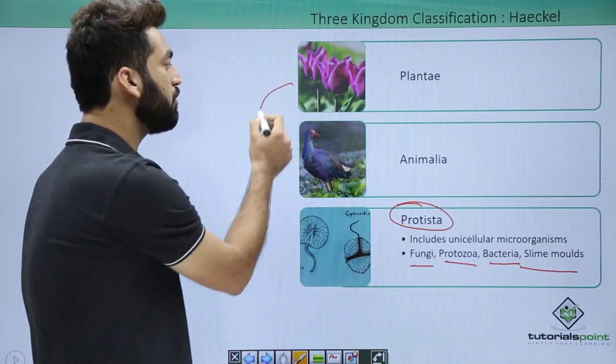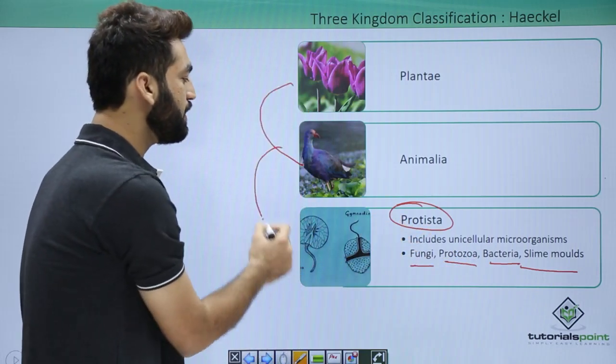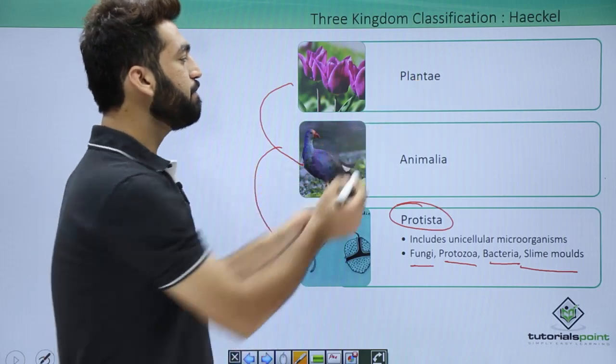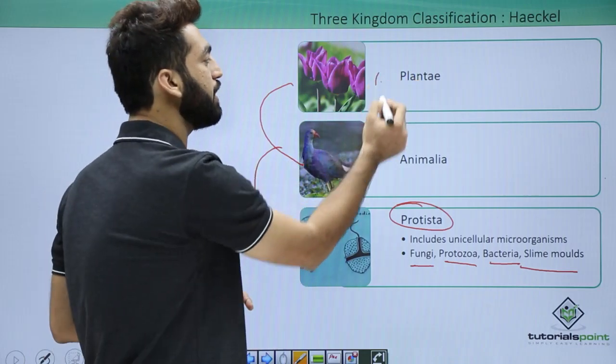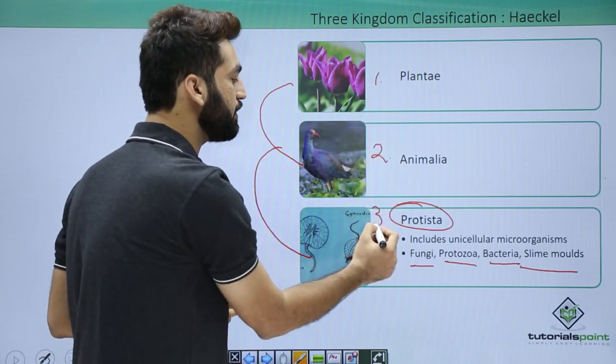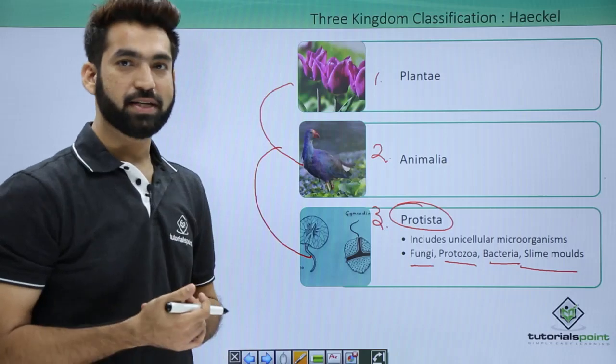So now we have three groups in totality: the first is Plantae, the second kingdom is Animalia, and the third kingdom is Protista.